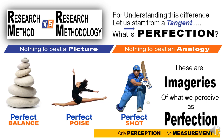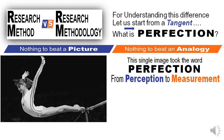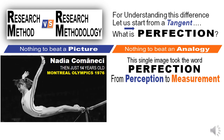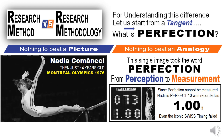Remember, perfection at this point is only a perception. There is no measurement associativity to it at this point. This single image took the word perfection from perception to measurement. Nadia Comaneci, then just a 14-year-old, demonstrated to the world in the Montreal Olympics 1976 that perfection can be measured. Unfortunately, the instruments were not programmed, and the iconic Swiss watch could record only up to 9.99. So when Nadia hit the so-called perfect 10 in the uneven bars, it showed to the world 1.00. What a classic irony.